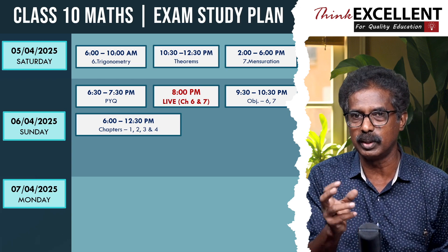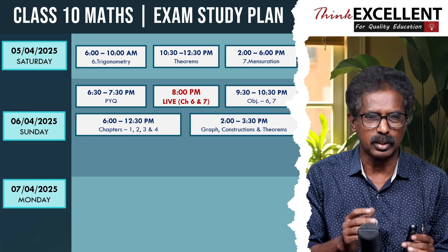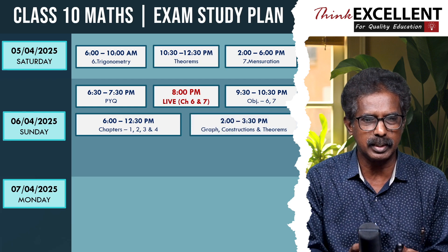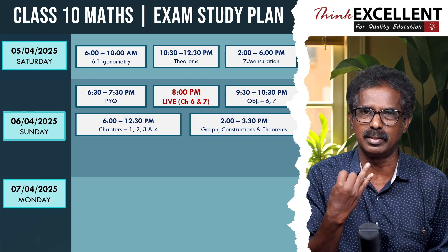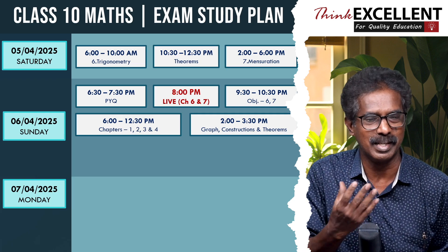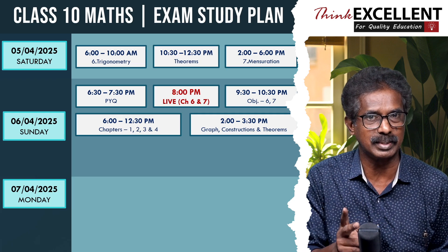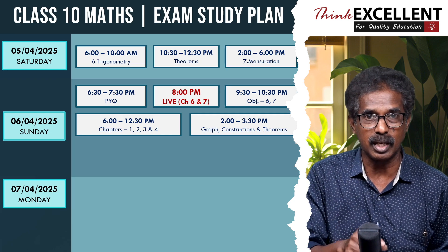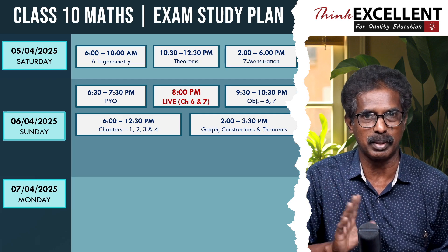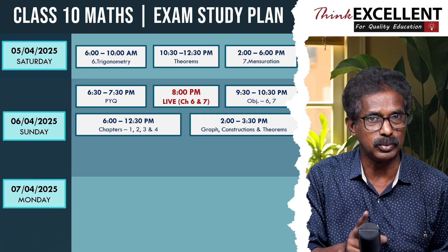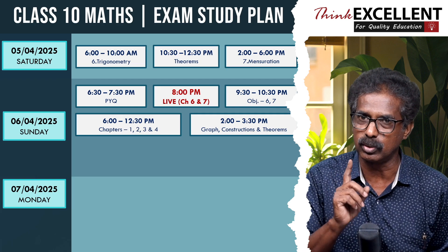If you plan anything, take a short break. Then from 2 to 3:30, the most important thing: graph, construction, and theorems — see them one more time. Graph and construction carry risk — if you are going through them, you could earn 8 marks. You should not take any risk; try to go through everything.